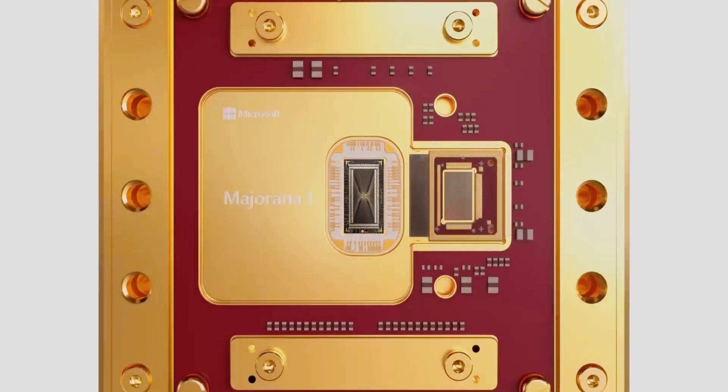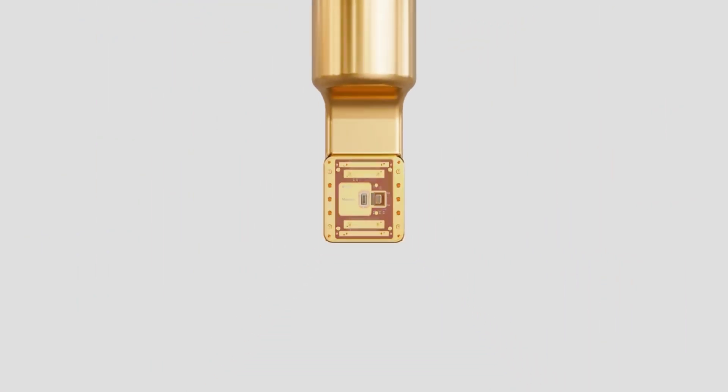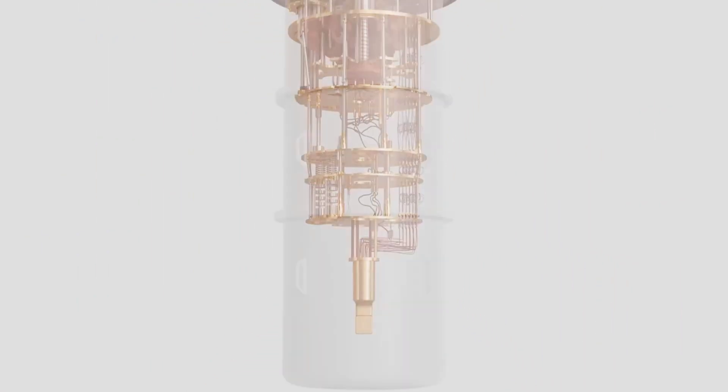Notably, Majorana 1 is the first quantum processing unit, or QPU, based on a topological core, specifically designed to scale up to a million qubits within a single chip.